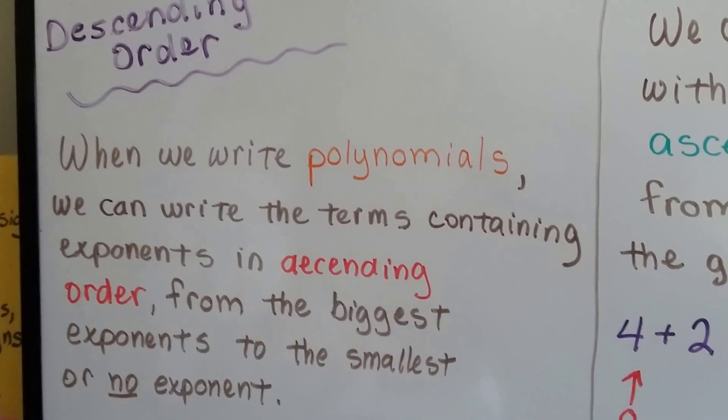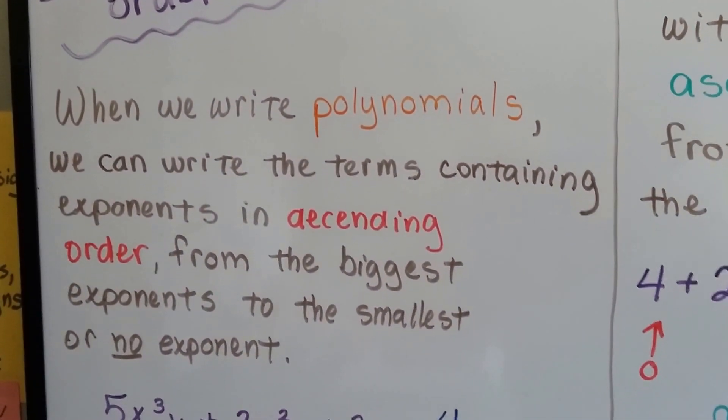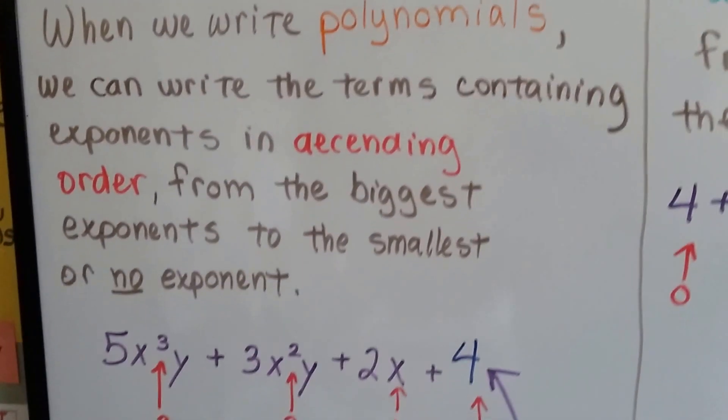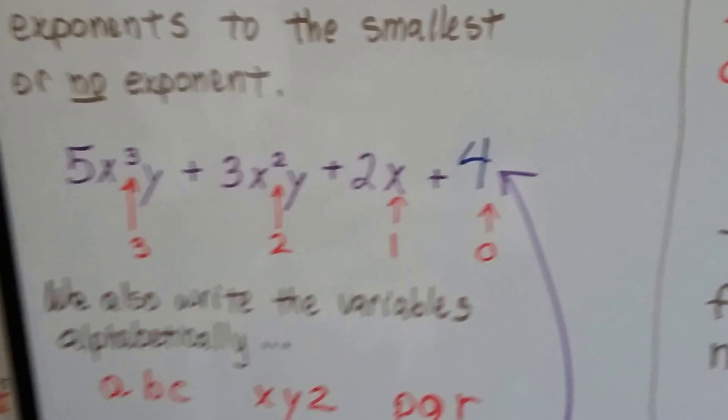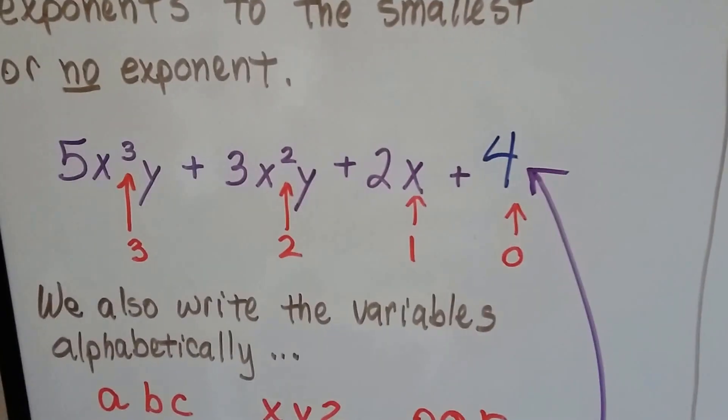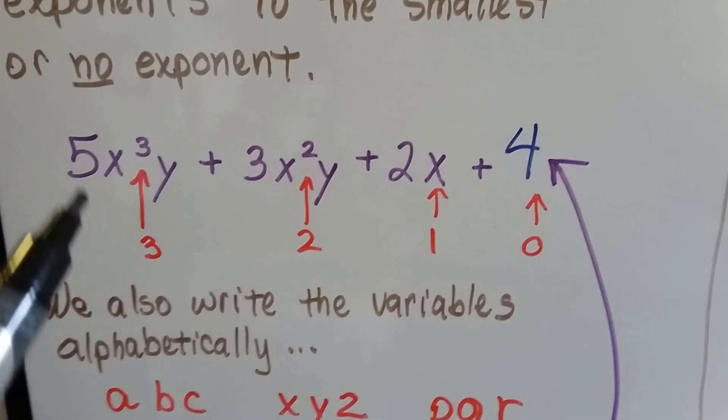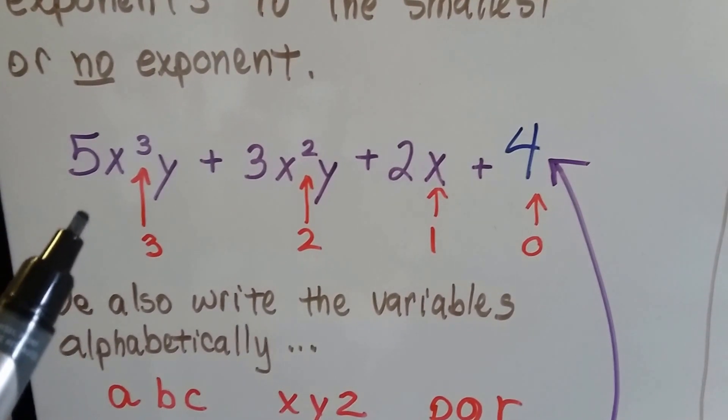When we write polynomials, we can write the terms containing exponents in ascending order from the biggest exponent to the smallest or no exponent. Here's a polynomial in x. So that means it's in descending order according to what x is doing.